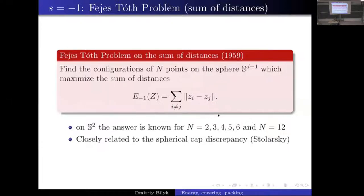Another very interesting feature of this particular energy on the sphere is that it's closely related to the so-called spherical cap L² discrepancy. There is an identity — which I may mention in one of my last talks — that minimizing the spherical cap L² discrepancy is exactly the same as maximizing this sum of distances.